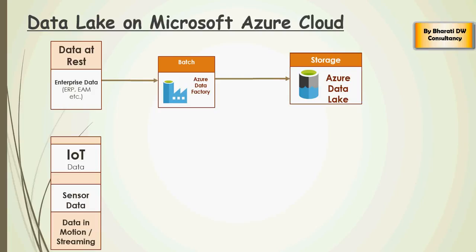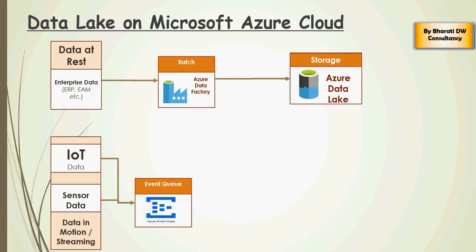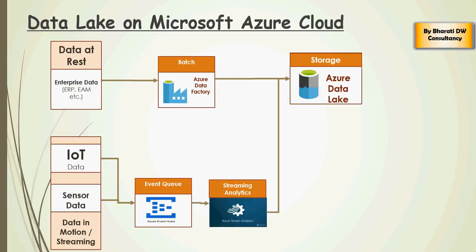This top piece has already been done in the previous videos. In the next set of videos, we are going to talk about event queue, which is going to enable real-time access and ingestion of data from IoT and sensor data. And then these event queues, which is Azure Event Hub, would publish the data using streaming analytics onto the data lake. Very simple architecture, step-by-step understanding on how it needs to be done.